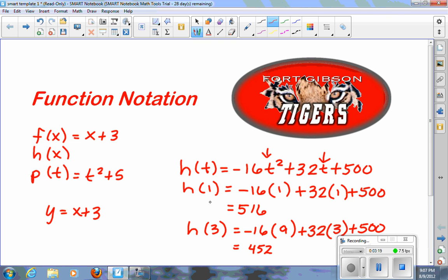And so what this is telling me is, if I started at 500, like I said, and I hit it 1 second, the golf ball is 516 feet. After 3 seconds, the golf ball is 452 feet. It must mean it's going down right here. So this is what function notations are for.